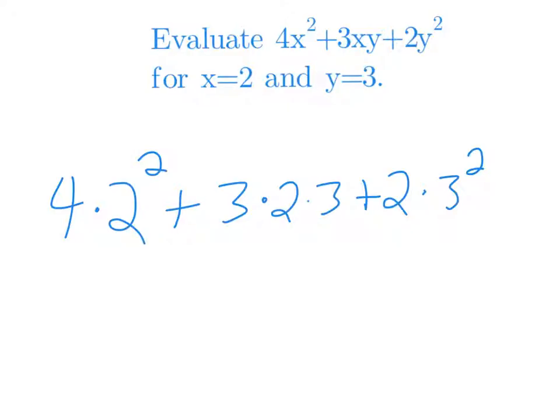2 squared is 4. Times 4 is 16. 3 times 2 times 3 is 18. Remember your order of operations. We do our exponents first. 3 squared is 9 times 2 is 18. You add those together. And you get 18 and 18 is 36 plus 16, 52.